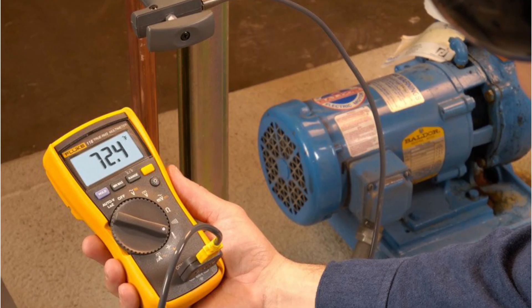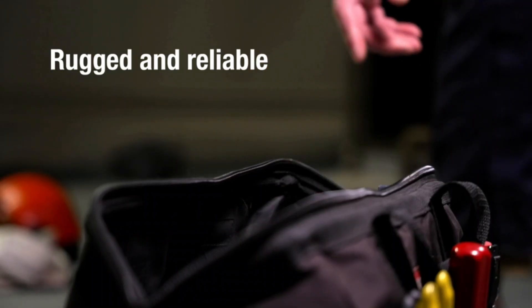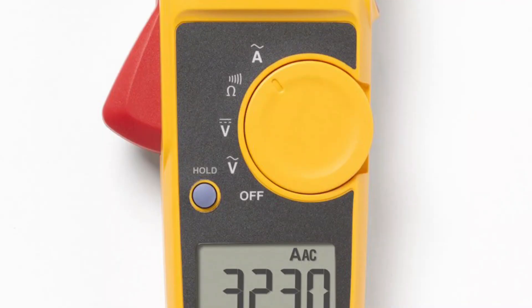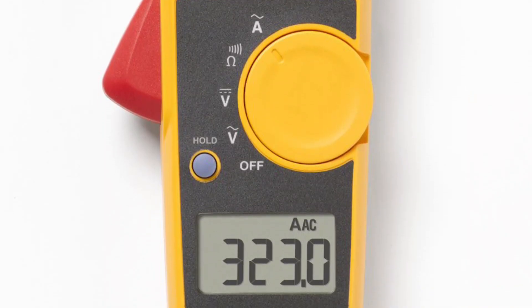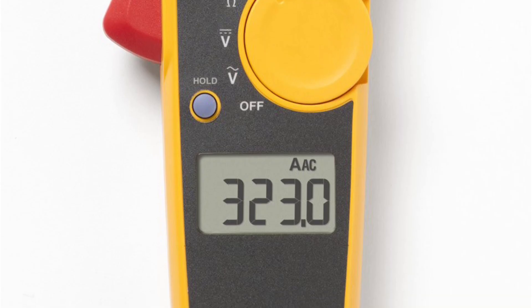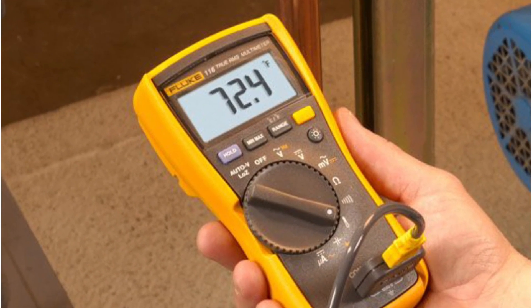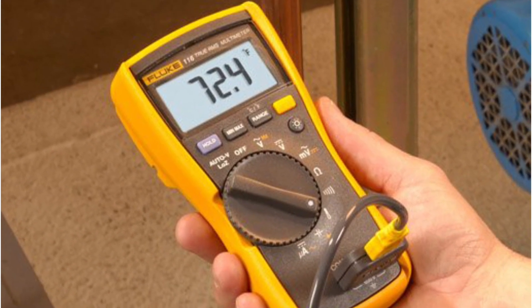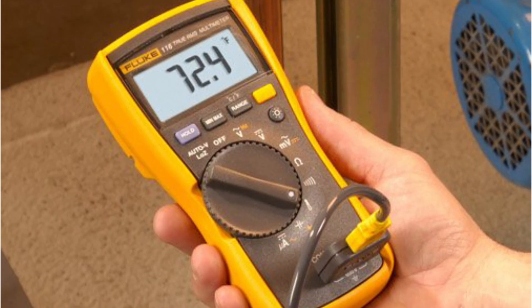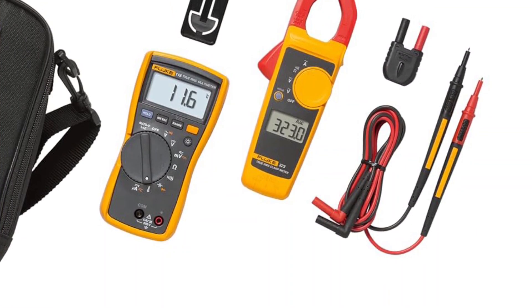The 116 Multimeter is specifically tailored for HVAC applications, offering microampere measurements for flame sensors, a built-in thermometer, and low-input impedance to prevent false readings from ghost voltage. The 323-KIT Multimeter provides accurate true RMS AC voltage and current measurements, essential for non-linear signals. Both instruments deliver fast, reliable readings and are built to withstand rough job site conditions, ensuring longevity.